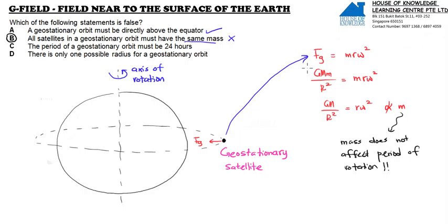Let's do a quick analysis about anything rotating about the Earth. Gravitational force provides the centripetal force. So GMm over R squared equals mR omega squared. The m and m strike away.